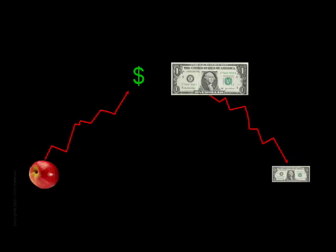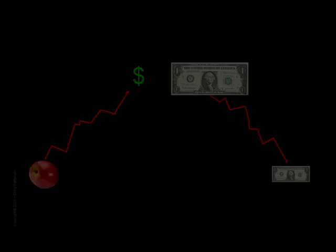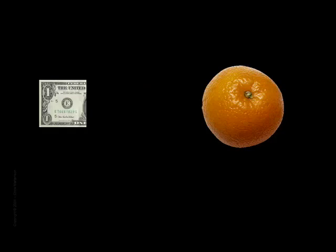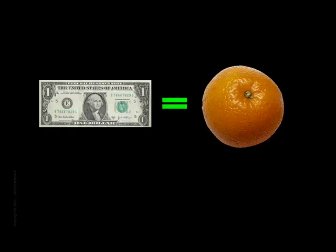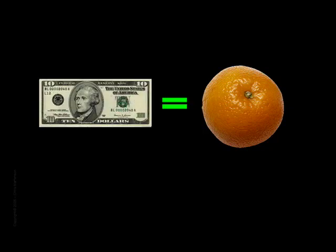Here's an example. Suppose you're on a life raft and somebody has an orange they're willing to sell for money. Only one person in the raft has any money — a single dollar. So the orange sells for a dollar. But just before it sells, you find a ten dollar bill in your pocket. How much do you suppose the orange sells for? That's right — ten bucks.